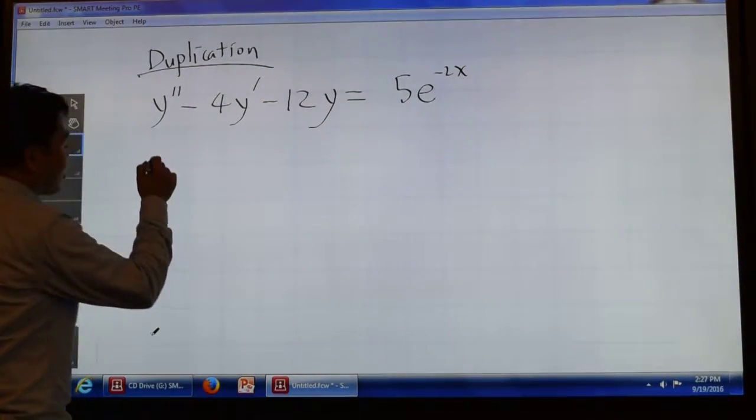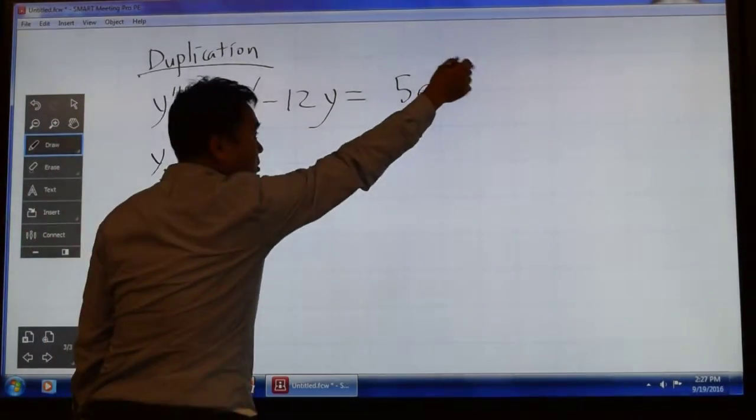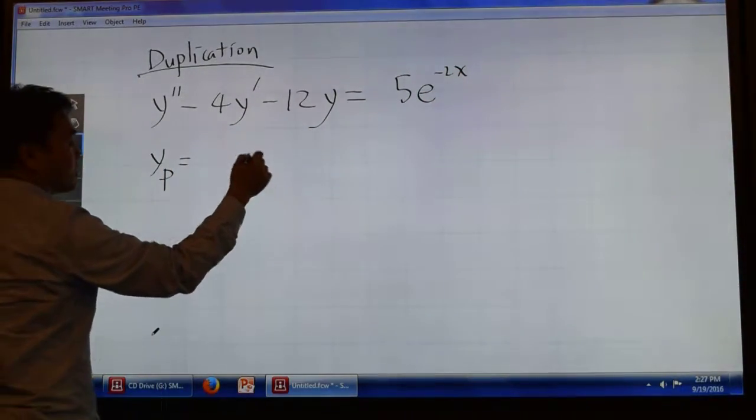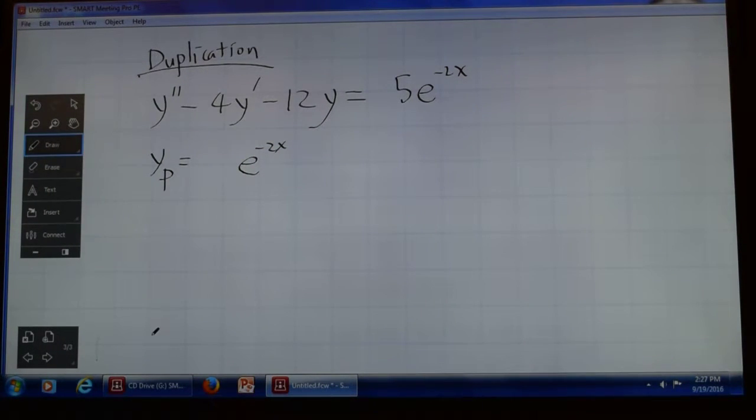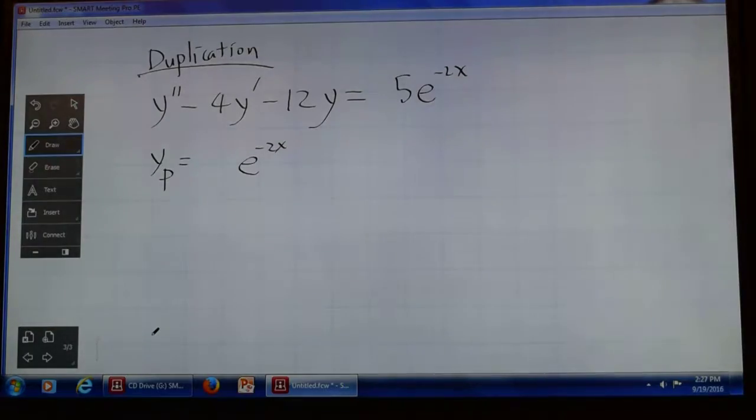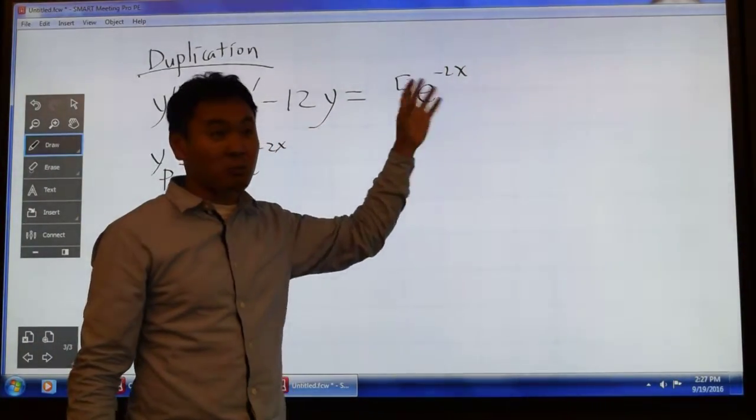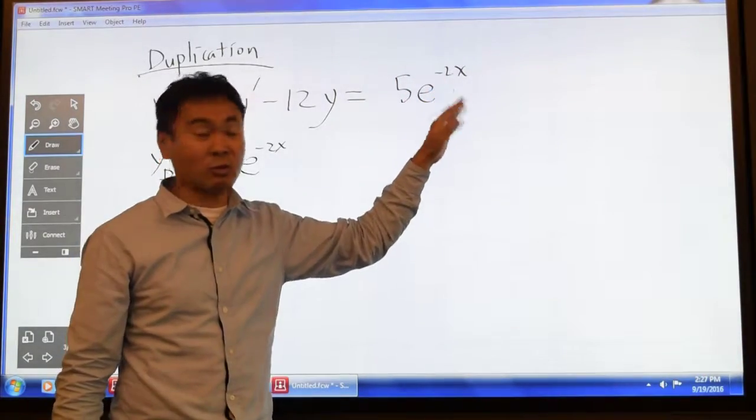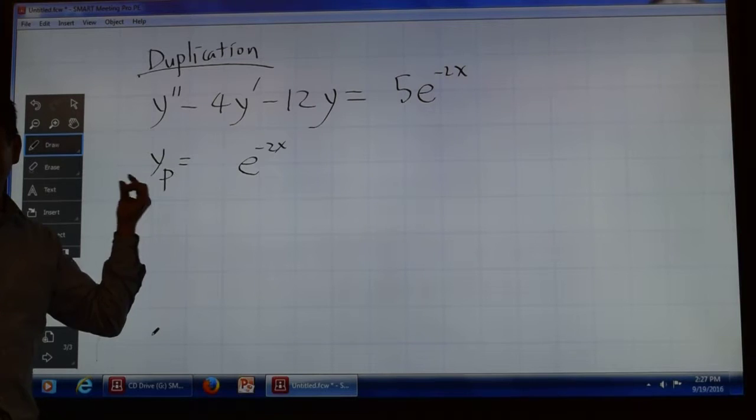We casually start out by saying I want my particular to look like this one, e to the negative 2x. Now if its derivative creates any other functions, then we should also include it, but the derivative of e to the negative 2x is negative 2 times e to the negative 2x, so it's the same thing. The derivative is always a multiple of itself, so we don't create anything new when you differentiate. So this is the only function you need inside the particular.